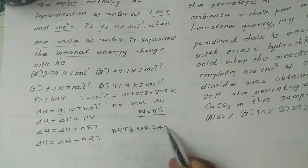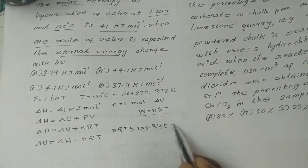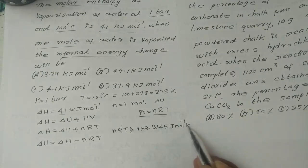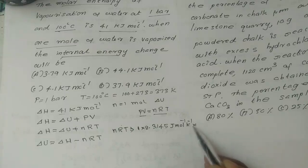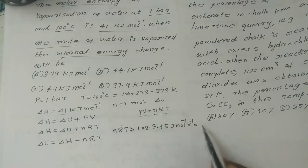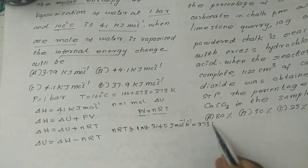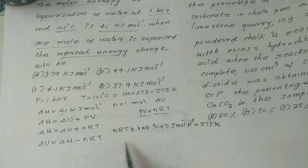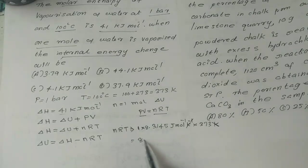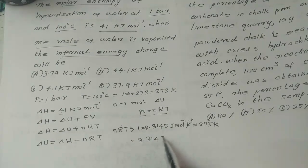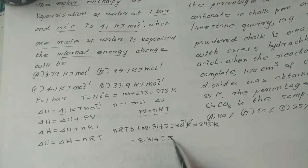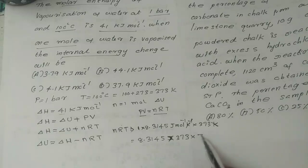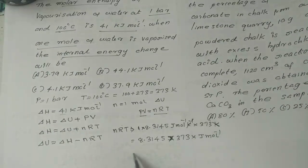Substituting: R equals 8.314 J mol raised to minus 1 Kelvin raised to minus 1, temperature equals 373 Kelvin. So n R T equals 1 into 8.314 into 373, giving the result in kJ mol raised to minus 1.